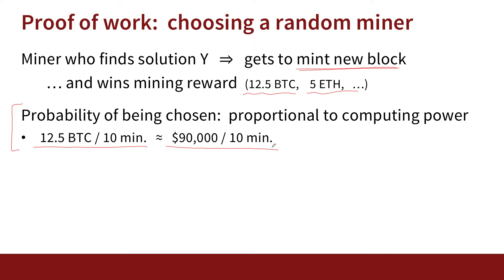The fact that $90,000 every 10 minutes is the maximum earnings puts an upper bound on the amount of power that economically makes sense to spend finding a solution Y. Looking at the price of power, $90,000 every 10 minutes translates to about 18 terawatt hours of energy at any given time. This is the maximum amount of energy that economically makes sense for proof of work while still making money from mining, and that applies to the whole ecosystem. Miners are not close to spending this much energy, but it's a theoretical maximum.